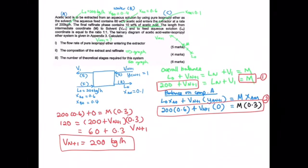You can find the answers for the second and third parts of the question in the video shared earlier. The values for the composition of the extract and raffinate, and the number of theoretical stages, are obtained using the graphical method.